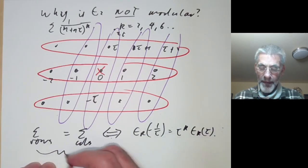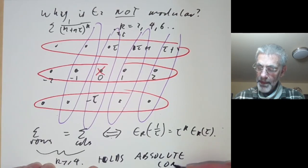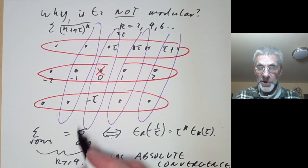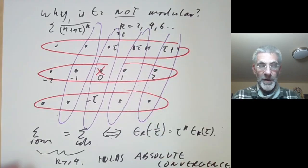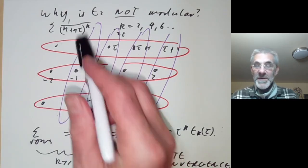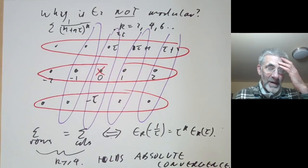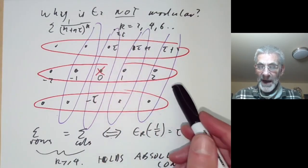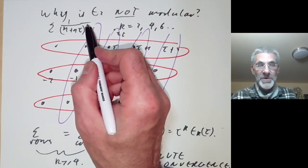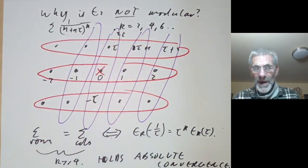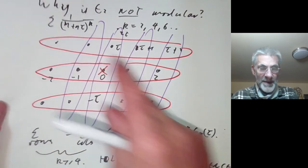For k greater than or equal to 4 this holds by absolute convergence. However, if k equals 2 the series is no longer absolutely convergent, and we get a slightly different answer depending on whether we first sum over rows or columns. This is a rare case where two natural ways of summing a series give different answers. The series for E2, although not absolutely convergent, only just fails — if we replace k=2 by anything bigger, the series would converge absolutely. When something is just on the borderline, we can usually get something useful by pushing a little harder.